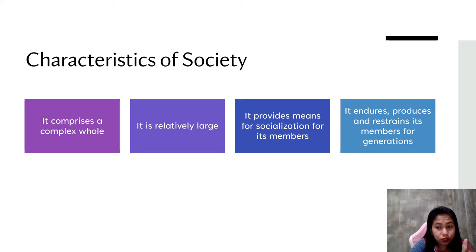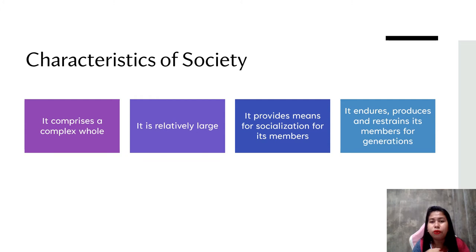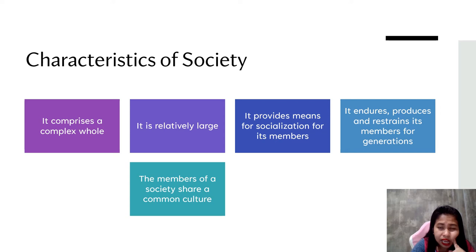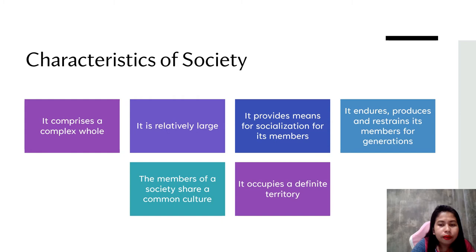Next, it endures, produces, and restrains its members for generations. For a society to survive, it must have the ability to produce, endure, and sustain its new members for generations. Number five, the members of a society share a common culture — all members of society are bounded by the same culture. And number six, it occupies a definite territory. The members of a society must live in a certain specific habitat or place and have a feeling of belongingness and sense of purpose.